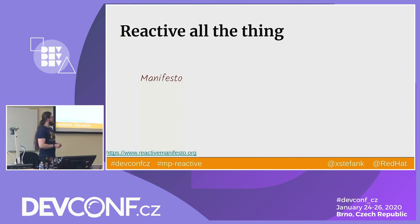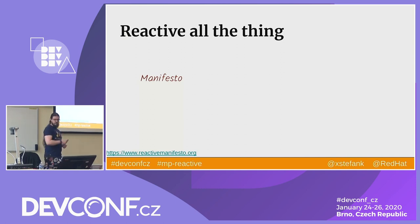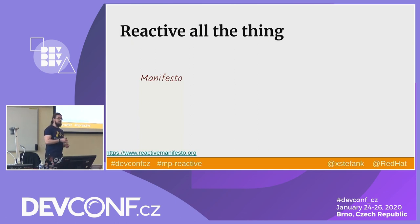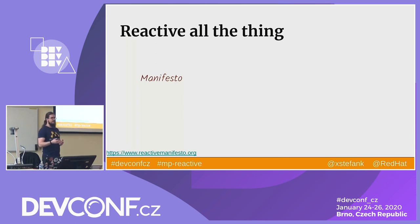It all started in 2014 with a document called the Reactive Manifesto, which is a one-page document available on reactivemaniifesto.org. It was put together by a group of five or six independent developers who identified properties that they found only in modern enterprise scalable reliable systems. They defined them as reactive systems and published this for people to see and try to achieve what they think is useful in modern applications.